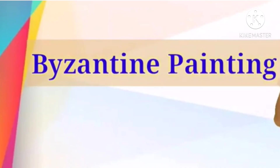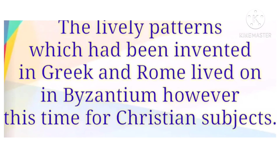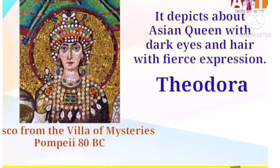The next Western classical art era is the medieval art era. Under medieval art is Byzantine painting. The lively patterns invented in Greek and Rome lived on in Byzantine — however, this time for Christian subjects. An example is the Villa of Mysteries, which depicts an Asian queen with dark eyes and hair and a fierce expression, named Theodora.